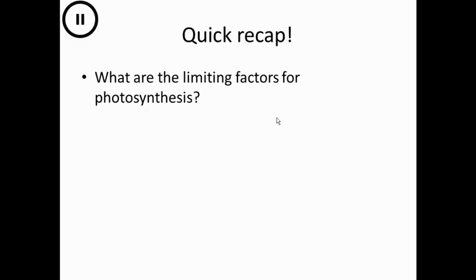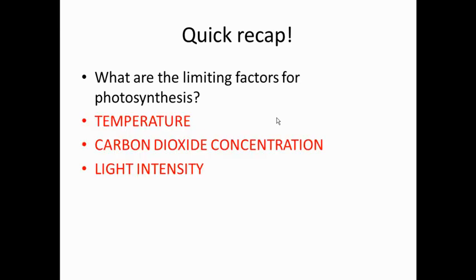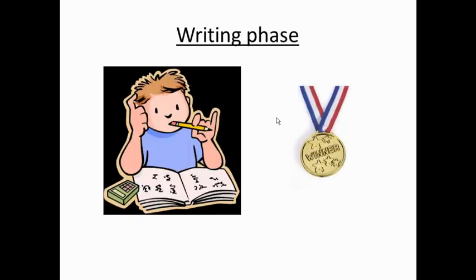So what are the rate-limiting factors for photosynthesis? Have a quick think and pause this slide now. The answer is temperature, carbon dioxide concentration, and light intensity are our rate-limiting factors for photosynthesis.